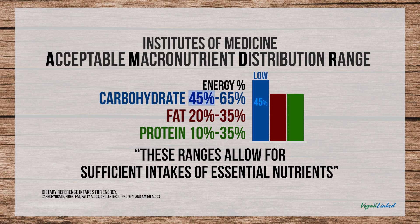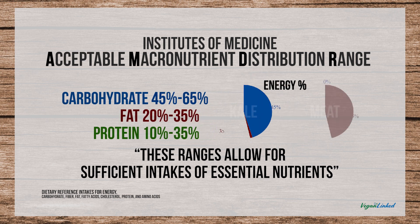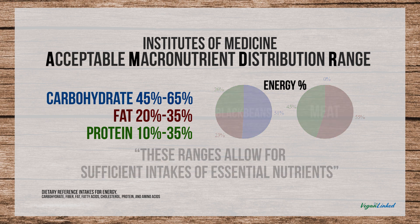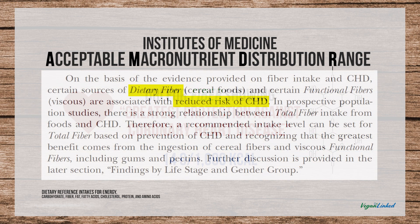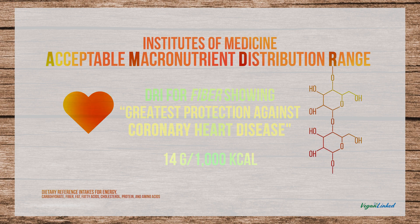Notice how the lower percentage of energy recommended from carbohydrates is still higher than the highest of both fat and protein. Carbohydrates are found exclusively in plants, along with the perfect ratio and distribution of fats, proteins, vitamins, and minerals. The daily recommended intake for fiber showing greatest protection against coronary heart disease is 14 grams a day per thousand calories, and like carbohydrates, fiber is only found in plants.